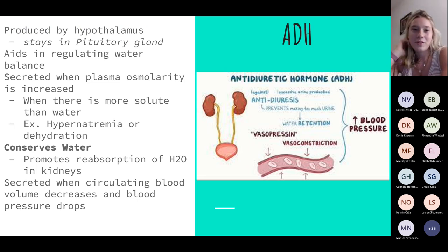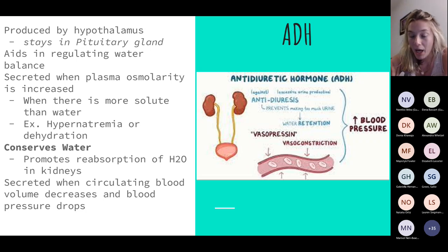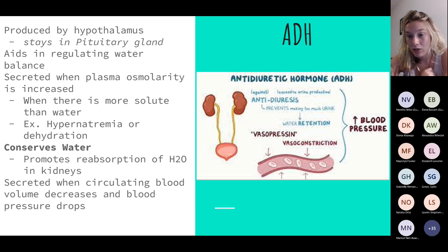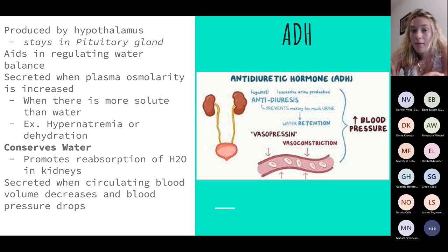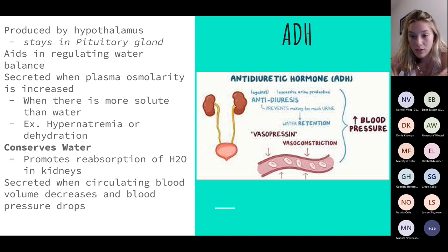ADH is essentially human vasopressin, which increases our blood pressure. If our patient is dehydrated, the body is going to release ADH to hold on to whatever water we have left to try to increase blood pressure. This is produced in the hypothalamus and stays in the pituitary gland, released when the body senses a drop in blood pressure. Anti-diuretic hormone — diuretic means pee, so anti-pee. It stops you from peeing. It stops the kidneys from taking that water from our body and flushing it out, which helps raise our blood pressure.